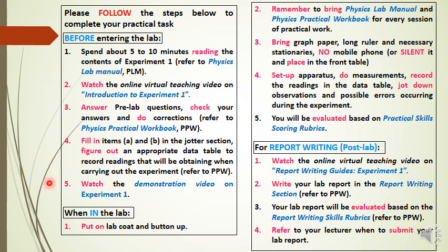Please follow the steps below to complete your practical task. Before you enter the lab: Step 1, spend about 5 to 7 minutes reading the contents of Experiment 1. Step 2, watch the online virtual teaching video on Introduction to Experiment 1, which is this video. Step 3, answer all the questions in the pre-lab module for Experiment 1 and check your answers, making the necessary corrections. Step 4, fill in items A and B in the Jotter session and figure out an appropriate data table to record readings. Step 5, watch the demonstration video on Experiment 1 before you enter the lab.